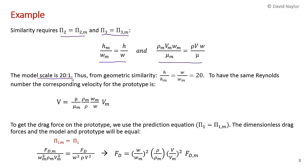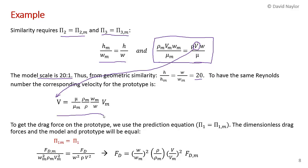We're told in the problem that the model is built to a perfect 20-to-1 scale, so we're satisfying the pi 2 parameter — the aspect ratio will be the same for the model and prototype. The height of the prototype over the height of the model is 20, and the width of the prototype over the width of the model is 20. We then use the pi 3 parameter to find the velocity of air over the prototype that gives the same Reynolds number, solving pi 3 equals pi 3m for v — relating the velocity of air for the prototype to the velocity of water for the model.